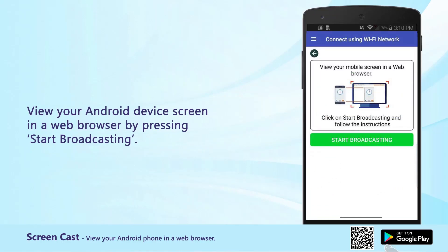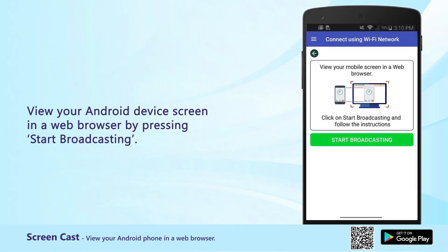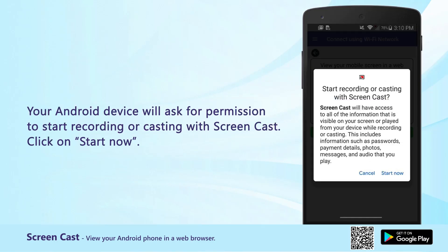View your Android device screen in a web browser by pressing Start Broadcasting. Your Android device will ask for permission to start recording or casting with Screencast. Click on Start Now.